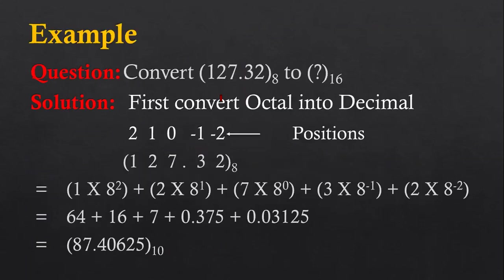Here we are going to convert octal to hexadecimal. First, convert the octal number into decimal by applying the multiplication method. The digits available at the left-hand side of the decimal point have positions 0, 1, 2, and the digits on the right-hand side have positions −1, −2. With these positions, all digits are multiplied: 1 × 8², 2 × 8¹, 7 × 8⁰, 3 × 8⁻¹, and so on. These multiplication results are added and the outcome is 87.40625. So, 127.32 in octal is converted into decimal as 87.40625.